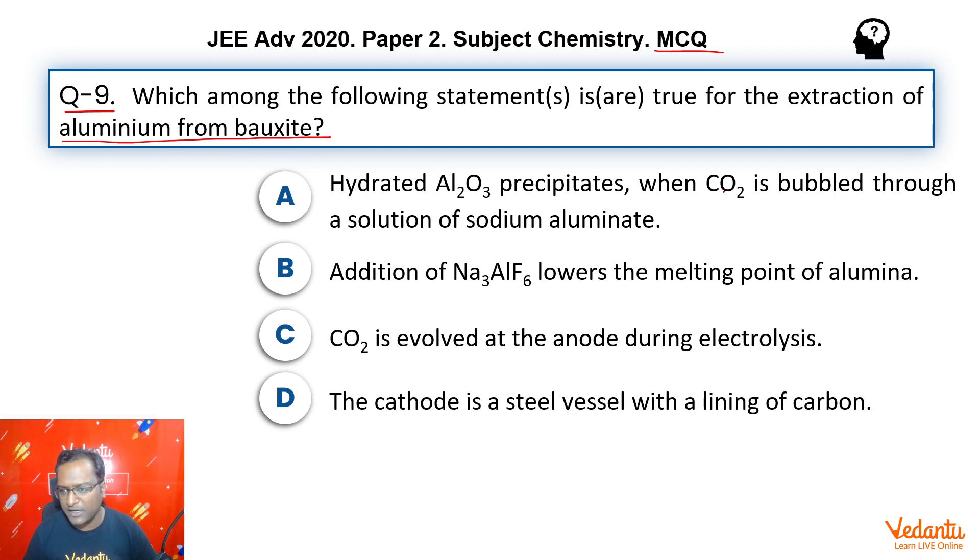Option A: hydrated Al2O3 precipitates when CO2 is bubbled - that is, we are talking about Bayer's process. Option B: addition of Na3AlF6 lowers the melting point - so this we are talking about Hall's process.